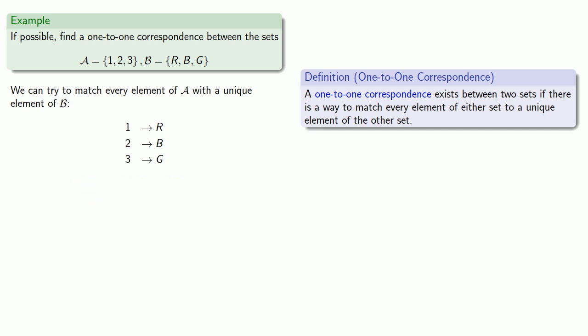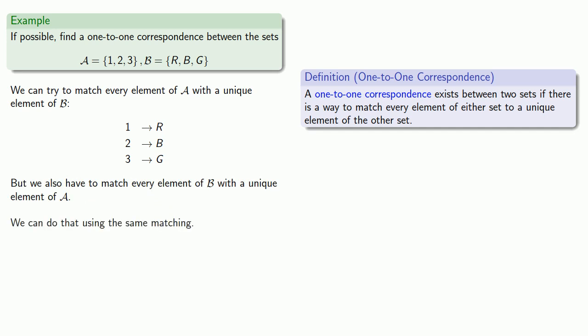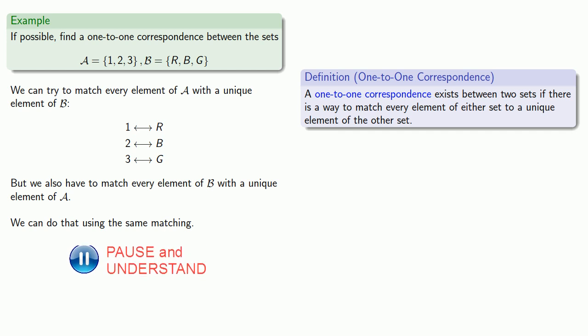But we also have to match every element of B with a unique element of A. Fortunately, we can do that pretty easily using the same matching, just going backwards. And so here is a one-to-one correspondence between the two sets.